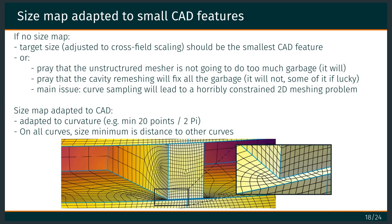But it's not so easy when you have a complex CAD model, because there are a lot of small CAD features. We need a size map adapted to the CAD. Because the curves are meshed first, the surface meshing problem is too constrained if you have a sparse point sampling on the curves near small features. To get a dense sampling at small features, we use this size map, and then it's possible to have a nice local quad mesh.